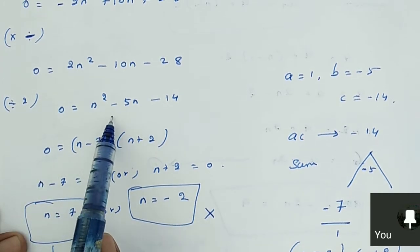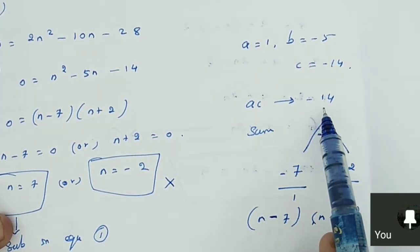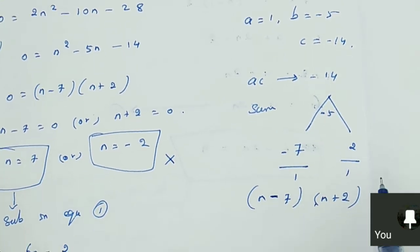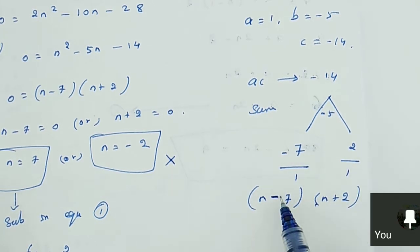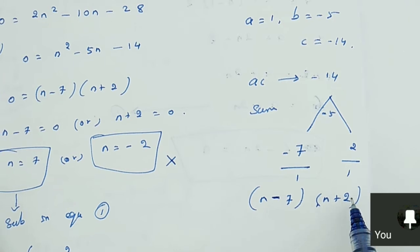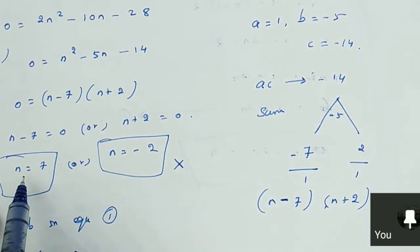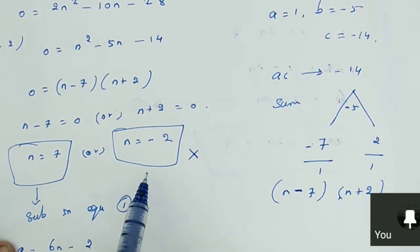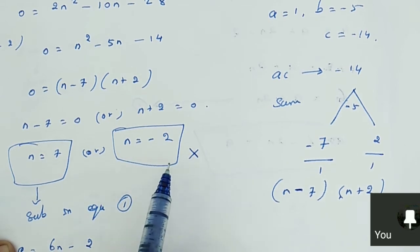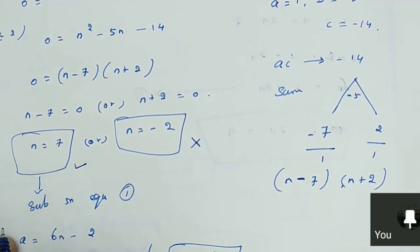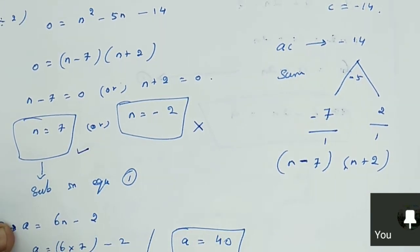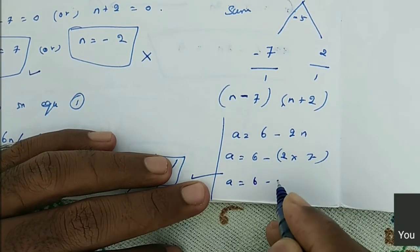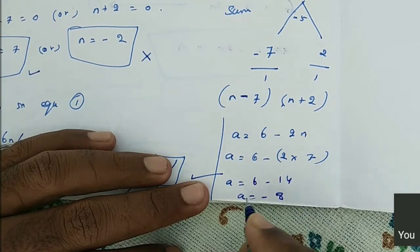We can find the factors by the usual factorization method. Multiplication of two terms is minus 14; sum of two terms is minus 5. So the numbers are minus 7 and 2. The factors are N minus 7 and N plus 2. So N is equal to 7 or N is equal to minus 2. Since the number of terms can never be negative, we take only the positive: N is equal to 7. Now substituting N equals 7 into equation 1: A equals 6 minus 2 into 7, so A equals 6 minus 14, so A equals minus 8.